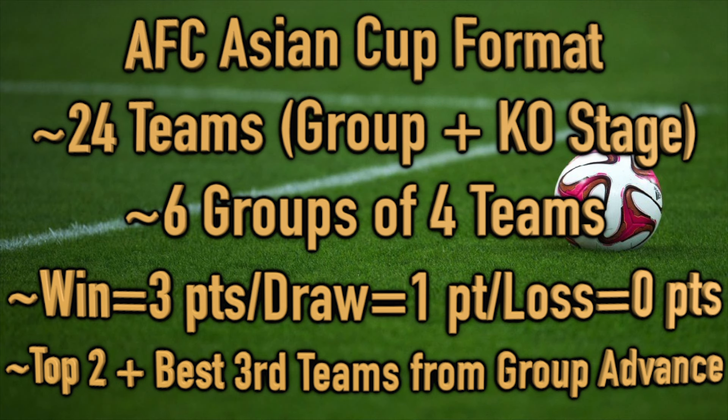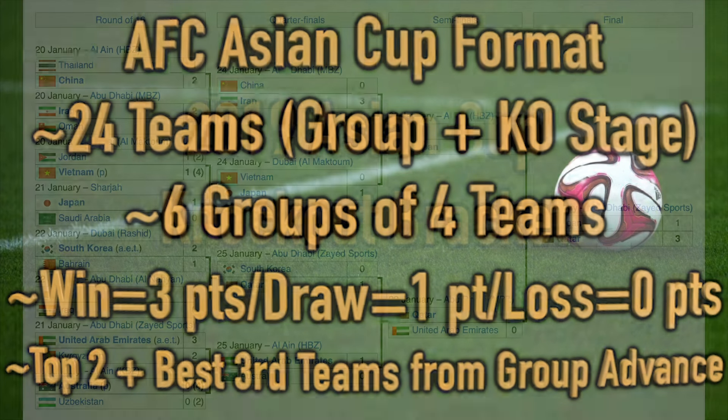We combine two phases: a group stage and a knockout stage. Our 24 teams are divided into six groups of four teams each. From there, the teams engage in group play in a single round-robin format, so every team is guaranteed to play at least three games — once against each of the other three teams in their group. Teams are awarded three points for a win, one point for a draw, and zero points for a loss. After the group stage, we tally up the points.